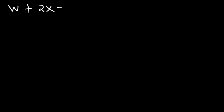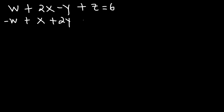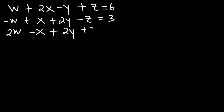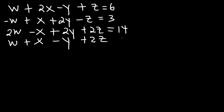In this lesson we're going to use Gaussian elimination to solve a system of equations with four variables: w plus 2x minus y plus z equals 6, negative w plus x plus 2y minus z equals 3, 2w minus x plus 2y plus 2z equals 14, and w plus x minus y plus 2z equals 8.